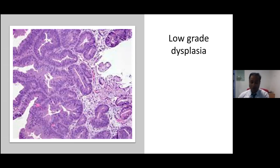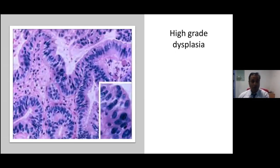In high-grade dysplasia, the polarity is lost and there is marked nuclear hyperchromasia, nuclear crowding, and cribriform architecture with some intraluminal papillary formation. This would be classified as high-grade dysplasia.